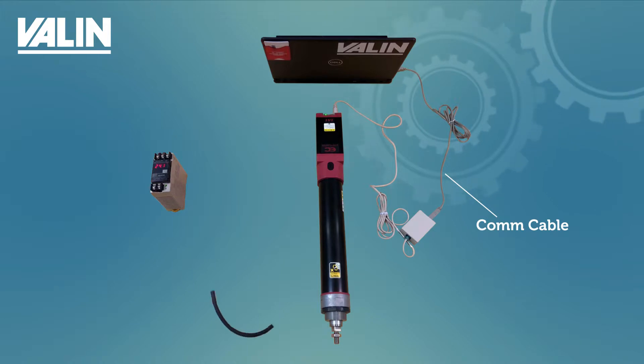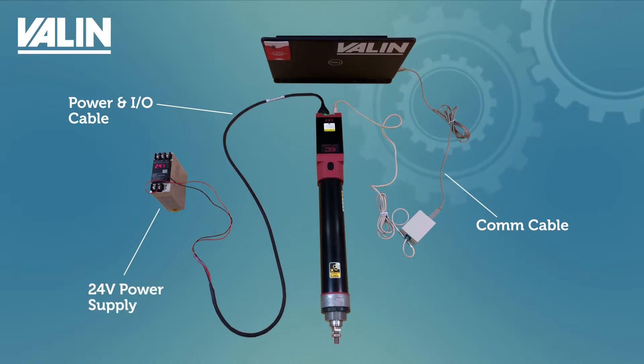Next, plug the connector end of the power and I/O cable into the LE cylinder and connect the black and red wires to a power supply. Additional I/O is provided and can be used to send and receive signals from the built-in controller.